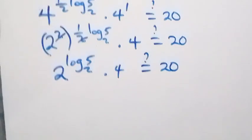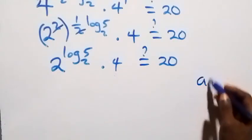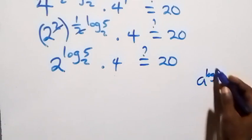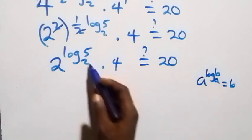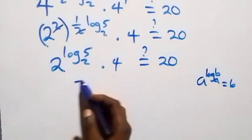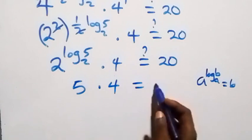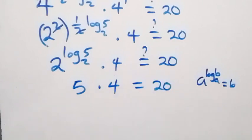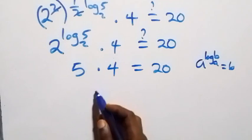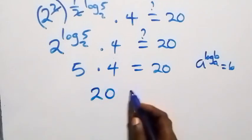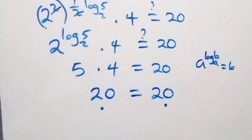This follows from the logarithm identity: a raised to power log base a of b equals b. So 2 raised to power log base 2 of 5 equals 5. Therefore, 5 times 4 equals 20, which equals 20. The left side equals the right side.